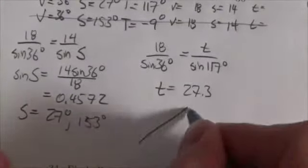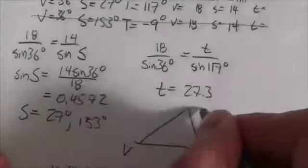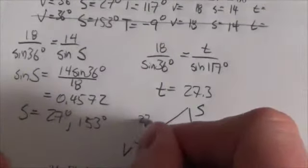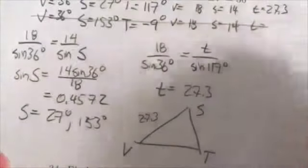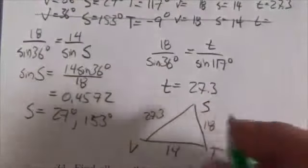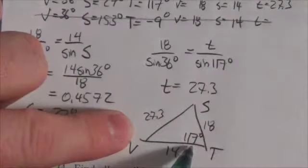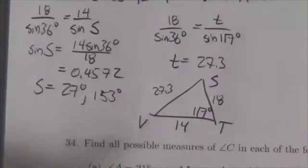And so we can just sketch this out here. Here's V, S, T. And this is 27.3. Sorry, I should put that up here as well. 27.3. Put that up with the rest of that data. S is 14. V is 18. And in this case, that makes perfect sense that the largest side would be opposite the largest angle. So that all looks very consistent. Just one solution.